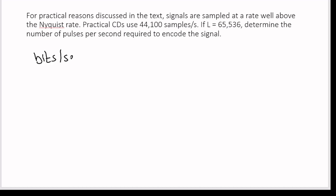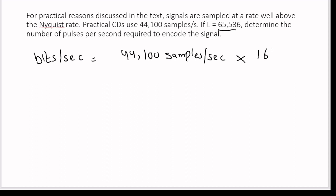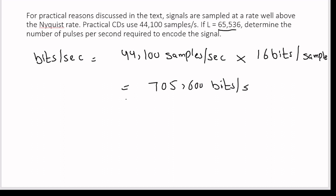Bits per second equals the sampling frequency of 44,100 samples per second multiplied by the number of bits required to encode each sample. Since the quantized levels are the same, we still need 16 bits per sample. Therefore the bit rate equals 44,100 times 16, which gives 705,600 bits per second. So this is your answer.